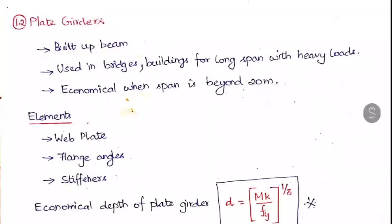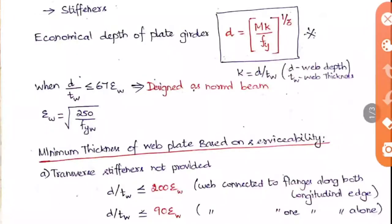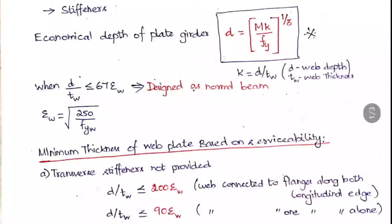So what are the elements of plate girders? One is the web plate, another is the flange angles, and then the stiffeners. We can consider the web, the flange, and the stiffeners. Plate girders may be of any shape — rectangle, I-shape, angle shape, or any shape. If we take an I-shape, we will have one web and on the top and bottom we will have a flange. That is the simple structure of this plate girder.